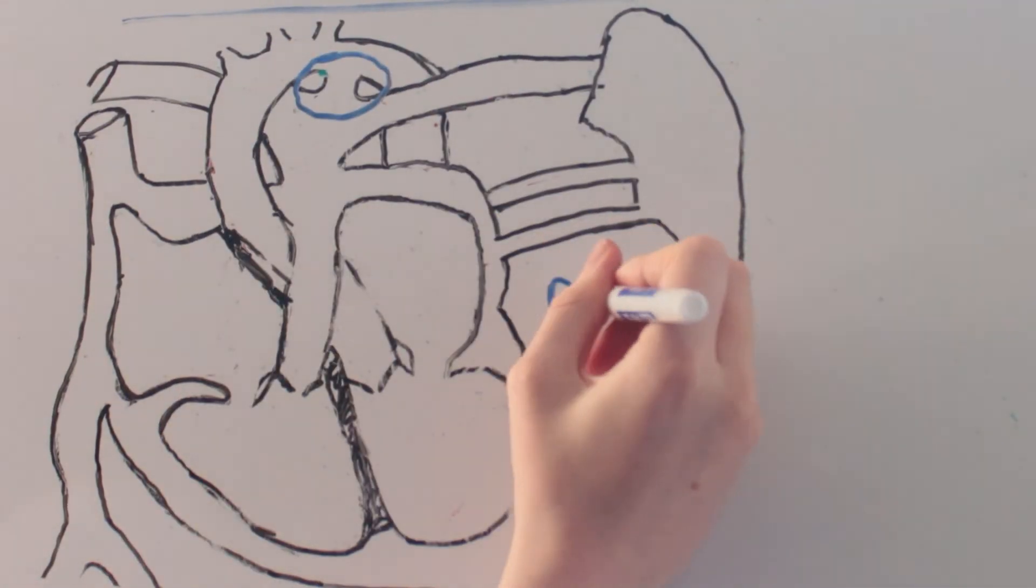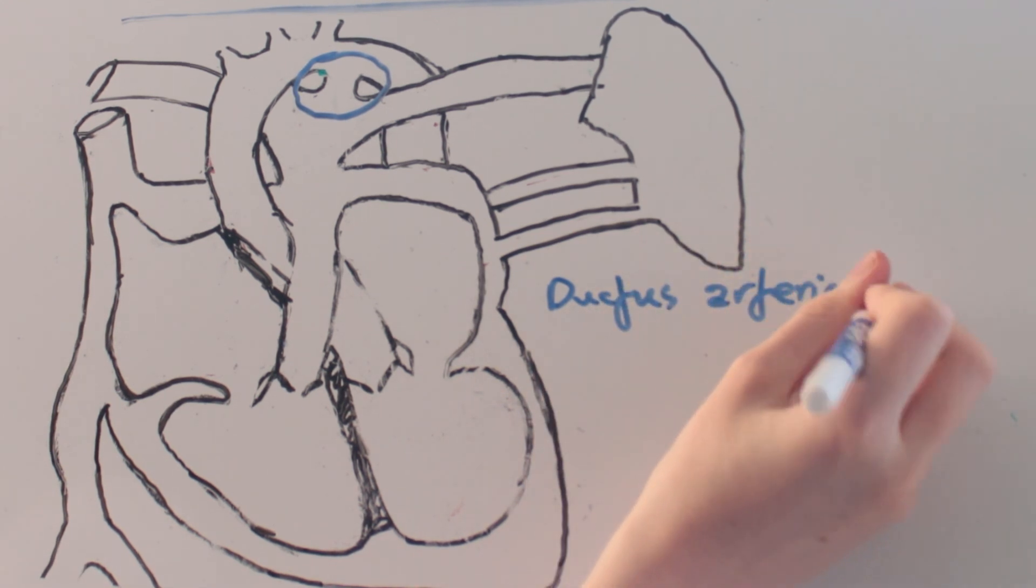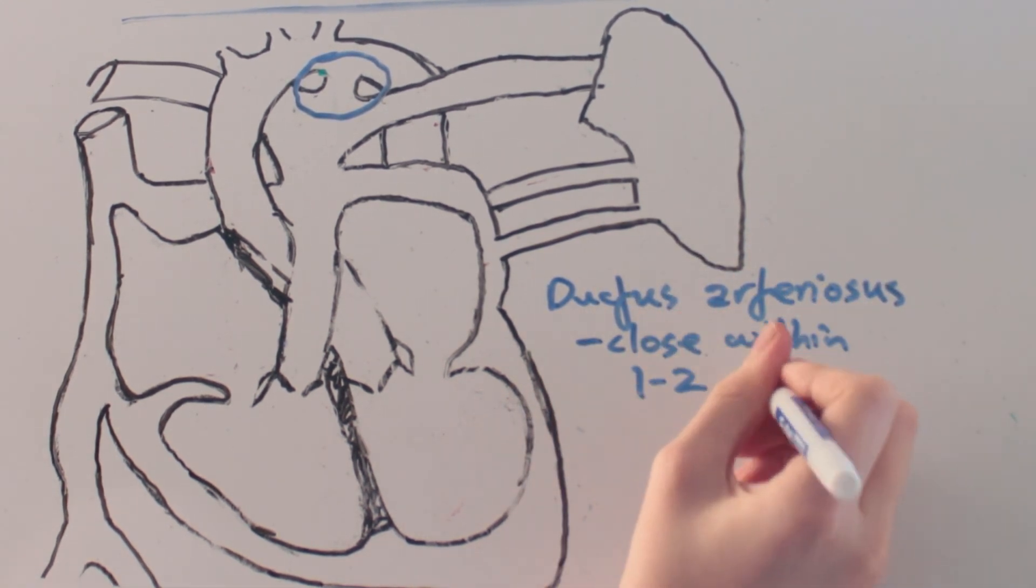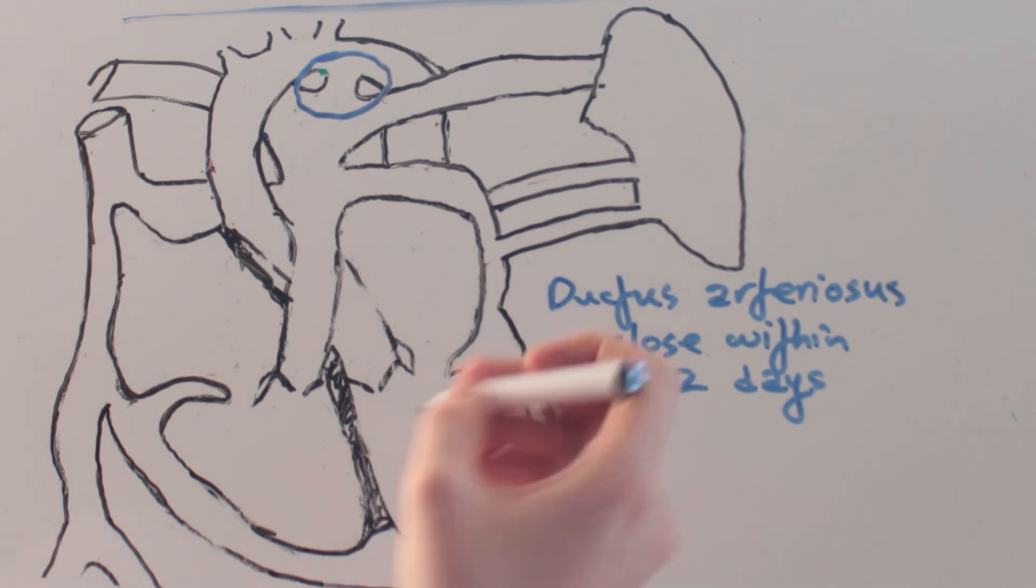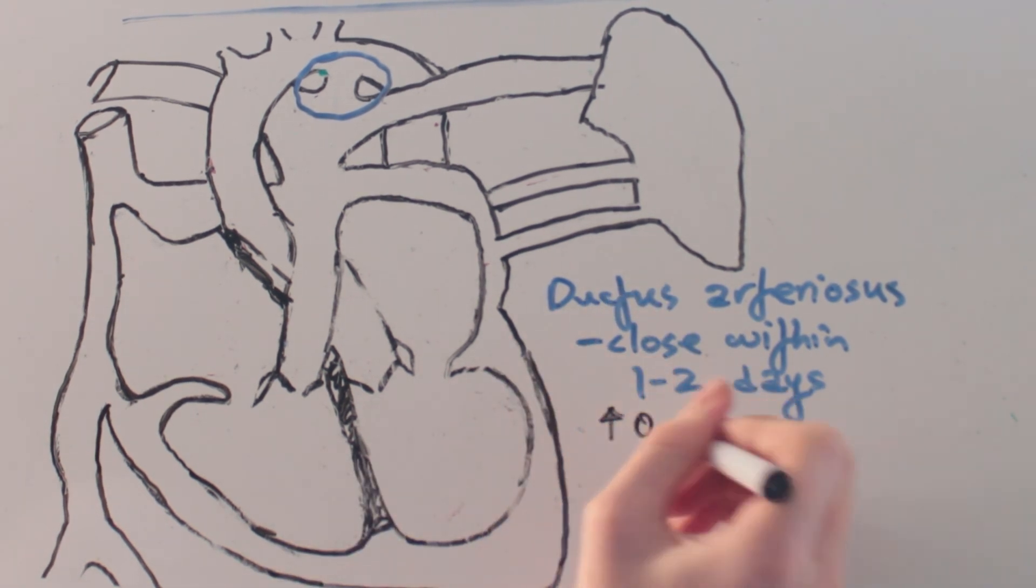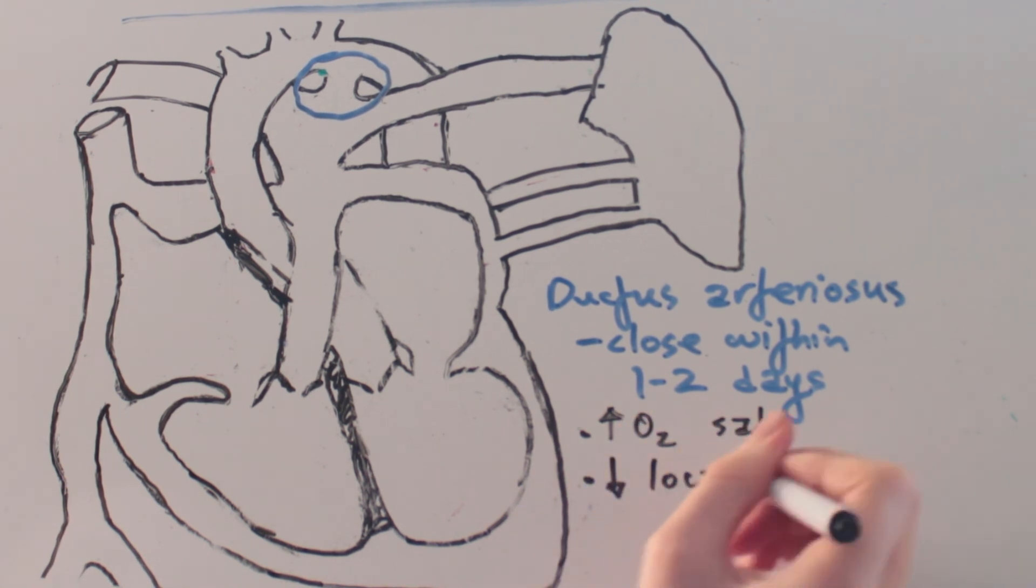So how does the ductus arteriosus close? It usually occurs within one to two days of birth in response to increased oxygen saturations when the baby takes its first breath, as well as in response to reduced local prostaglandin and reduced pulmonary vascular resistance.